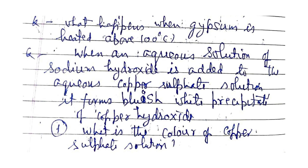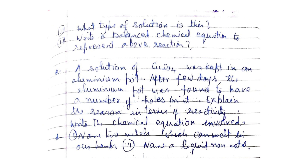When an aqueous solution of sodium hydroxide is added to aqueous copper sulfate solution, it forms a bluish-white precipitate of copper hydroxide. What is the color of the copper sulfate solution? What type of solution is this? Write a balanced chemical equation. A solution of copper sulfate was kept in an aluminium pot — after a few days, the pot had a number of holes. Explain the reason in terms of reactivity and write the chemical equation involved.